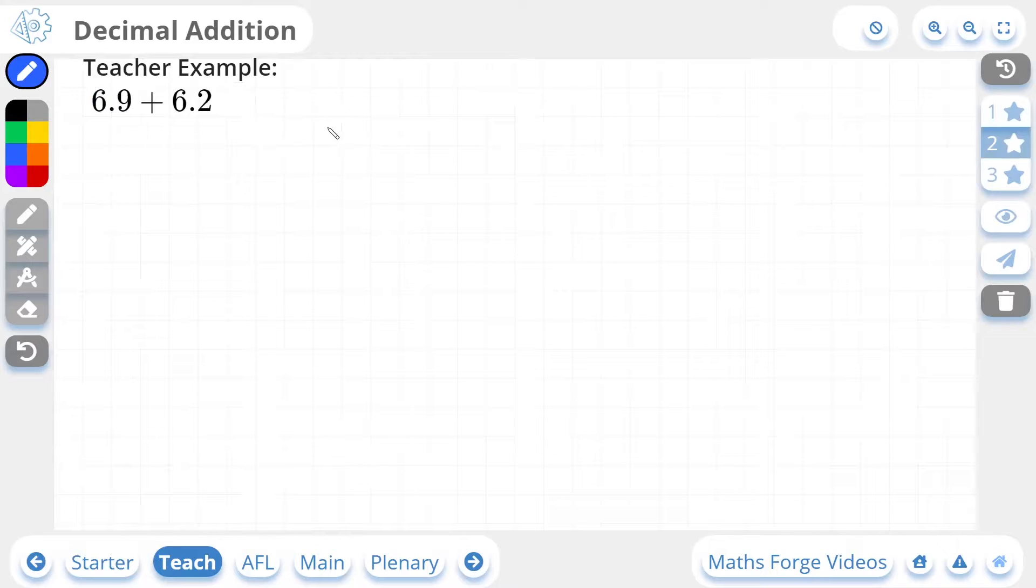Let's do a two-star example. So I've got 6.9 plus 6.2. Again, units over the units, tenths over the tenths. And we rule off.